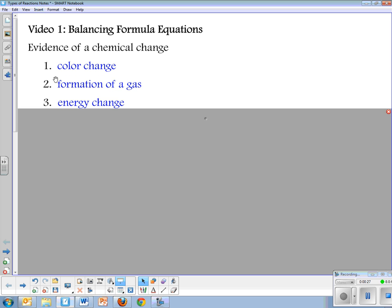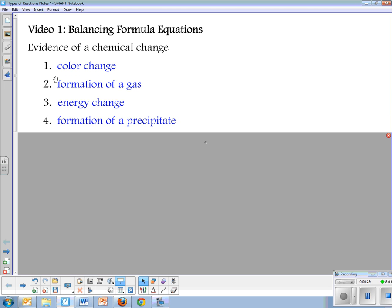So balancing chemical equations, what we're doing is we're looking at an equation, a reaction. If you remember from the beginning of the year, we learned about evidence of a chemical change. That is a reaction. There are four signs, usually we see more than one. The four signs are a color change, formation of a gas, an energy change, and formation of a precipitate.